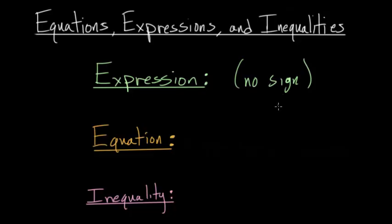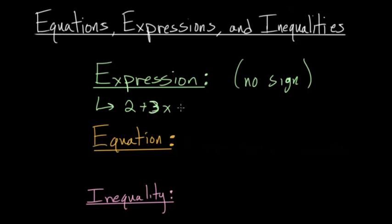So there's no equal sign, there's no greater than or less than sign. Let's look at a couple of different examples, maybe like 2 plus 3x. This is an expression because it's not equal to something, it's not greater than something else or less than — it's just different terms added together.